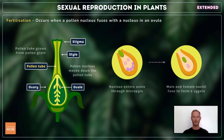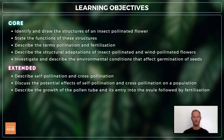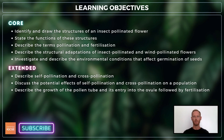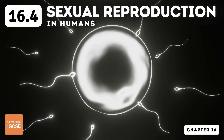Finally, you need to know a little more about fertilisation. When a pollen grain is transferred to a stigma, it absorbs some liquid from the sticky surface, and a tiny tube called a pollen tube begins to grow from the grain. The tube grows down the style and into the ovary, and then into an ovule through a tiny hole called a micropyle. A pollen nucleus travels down the tube and into the ovule, where it fuses with the female nucleus to form a zygote. That covers everything you need to know on topic 16.3, sexual reproduction in plants. I'll see you next time for topic 16.4, sexual reproduction in humans.